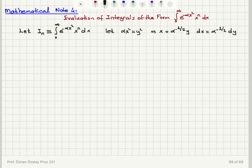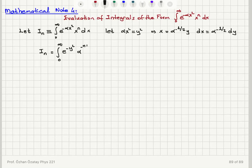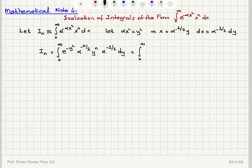So I'm going to get I sub n equal to the integral from 0 to infinity of e to the minus y squared, multiplied by x to the n and dx in terms of the substitution. This becomes equal to the integral from 0 to infinity of e to the minus y squared, alpha to the power minus 1/2 times n plus 1, times y to the n, dy.